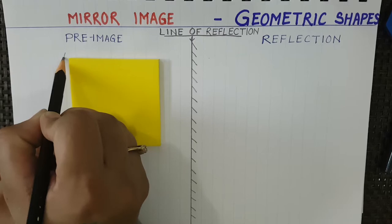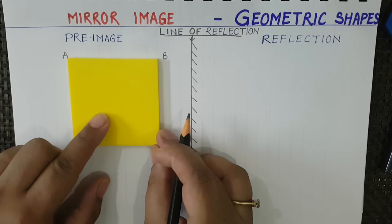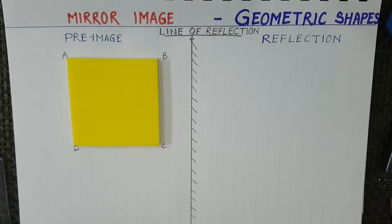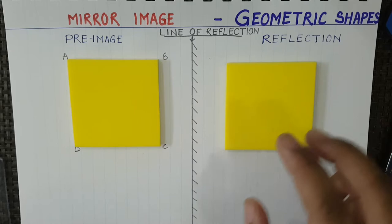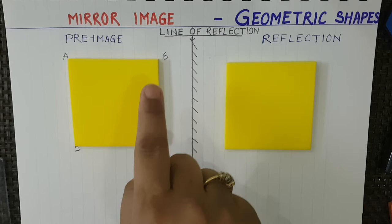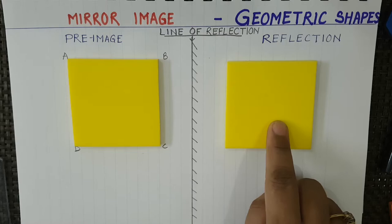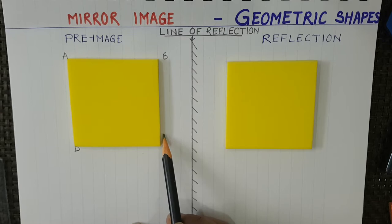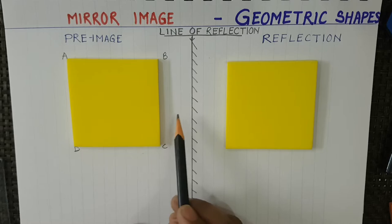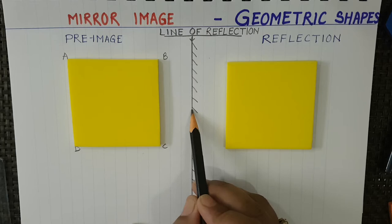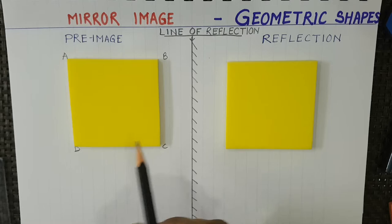Let me label the points. If I give this point the label A, this is B, this one is C, and this is D. Now this shape is going to be flipped. All the points of the pre-image will appear on the mirror image, and all the points should be at the same distance from the mirror.